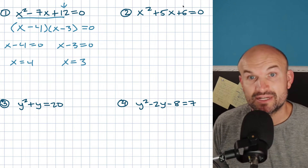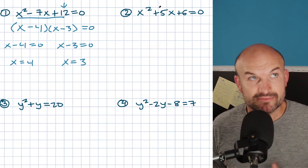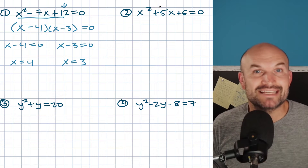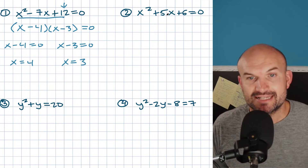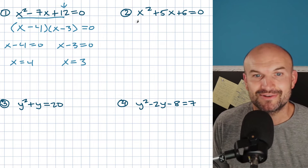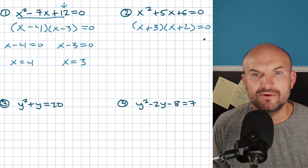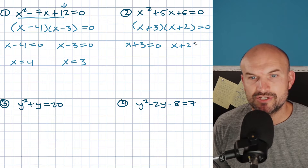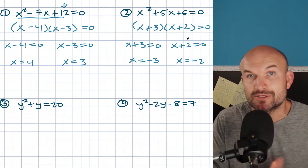In this next example, my last number is positive and my middle term is also positive. So I'm looking for the factors of 6 that add to give me 5. I have 6 and 1, and 3 and 2. 3 and 2 add to give me 5. And since five is positive, they both need to be positive. So I write (x plus 3)(x plus 2) equals zero. Applying the zero product property: x plus 3 equals zero and x plus 2 equals zero. Therefore x equals negative 3 and x equals negative 2. Those are your two solutions.